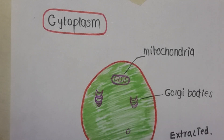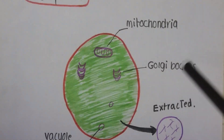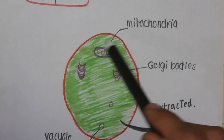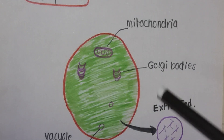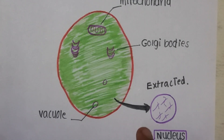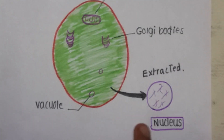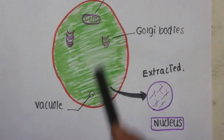Coming towards cytoplasm, I have brought the same simple animal cell again. This consists of mitochondria, Golgi bodies, vacuoles, and all other organelles surrounded by the cell membrane. But in this case, I will subtract only the nucleus from the cell.